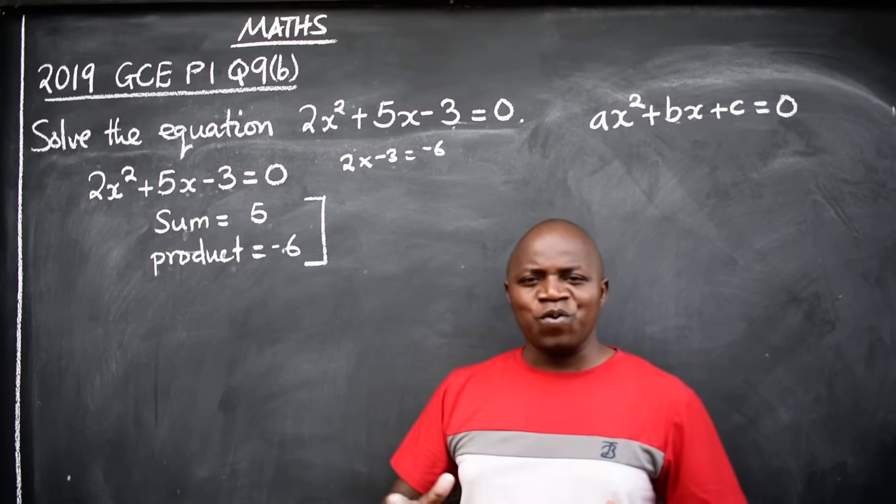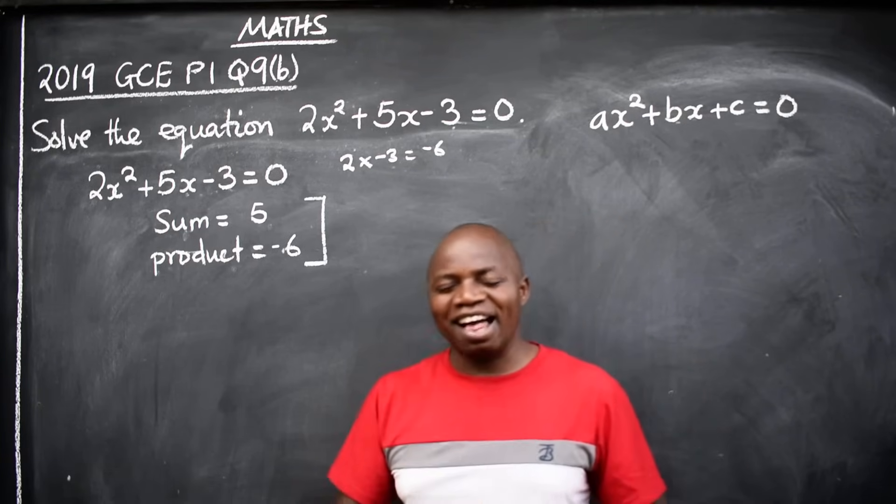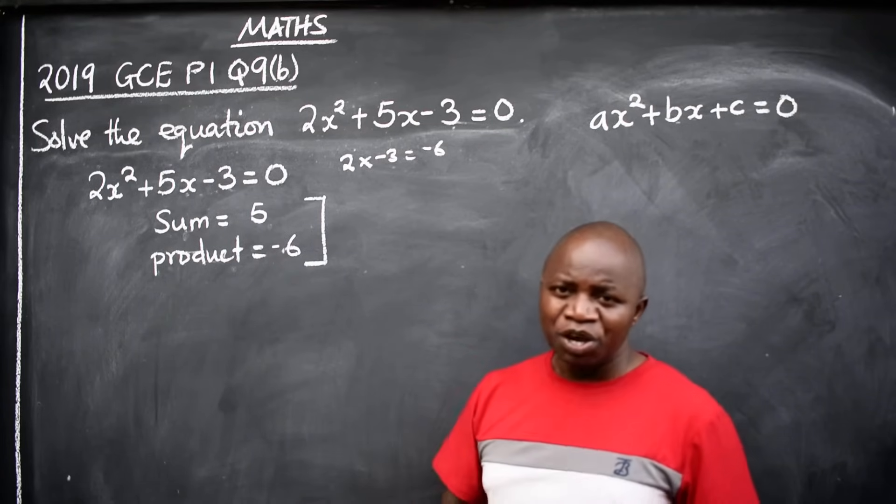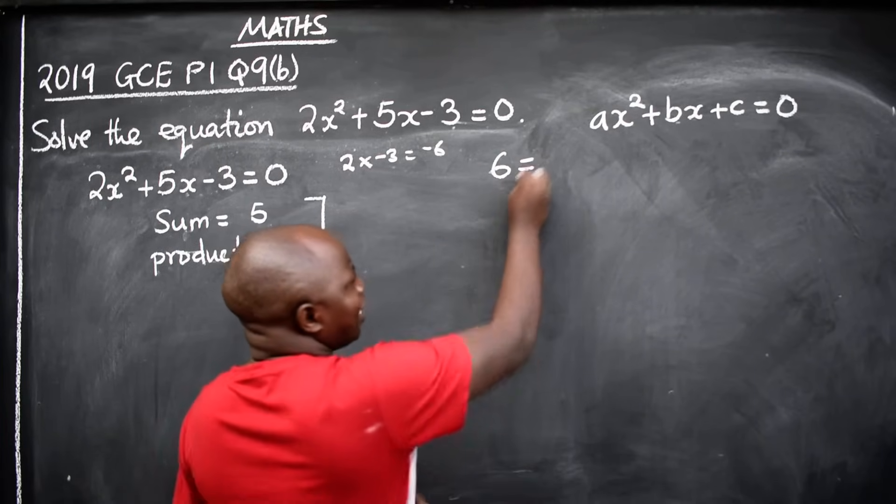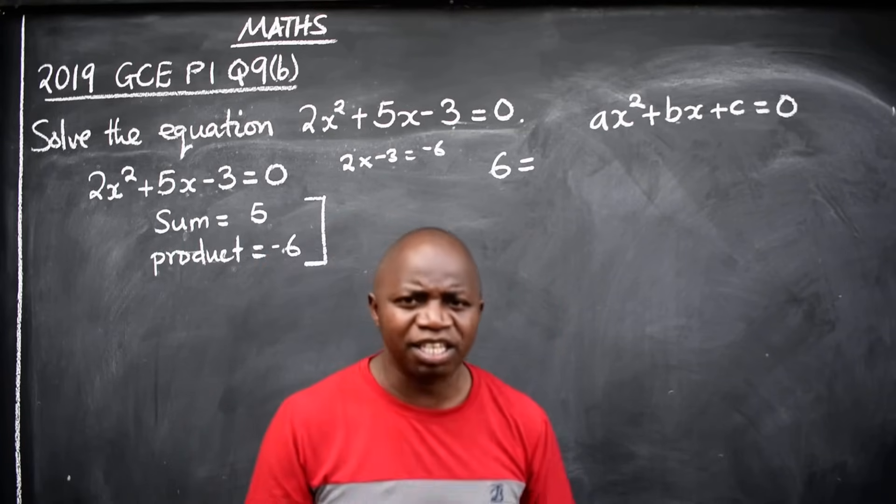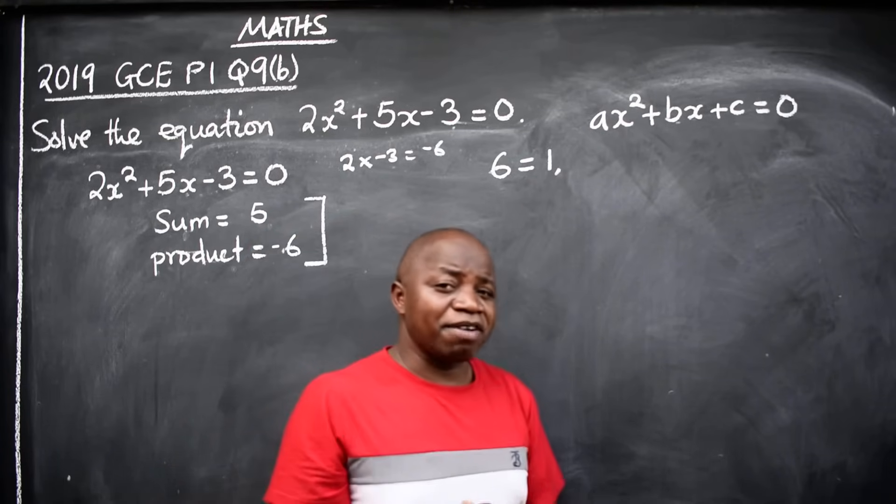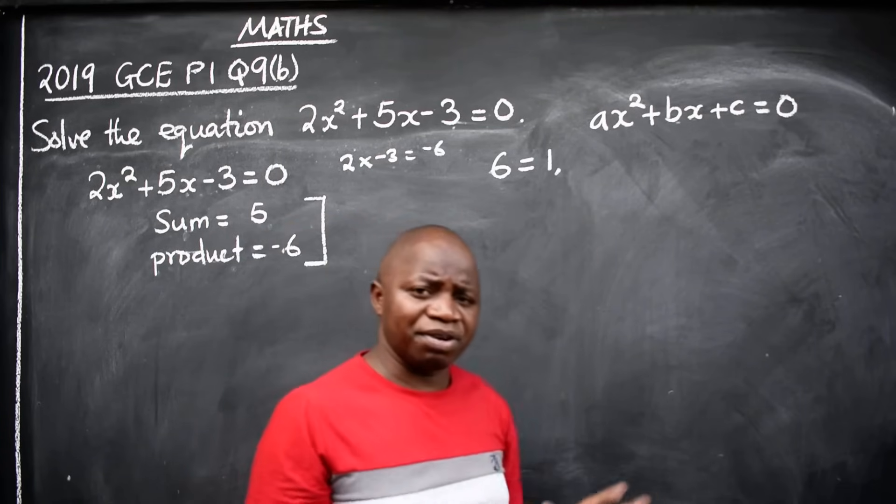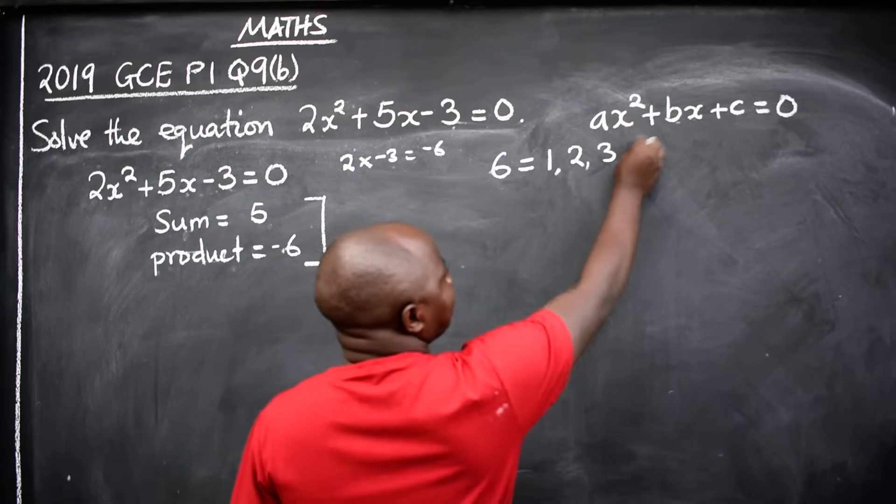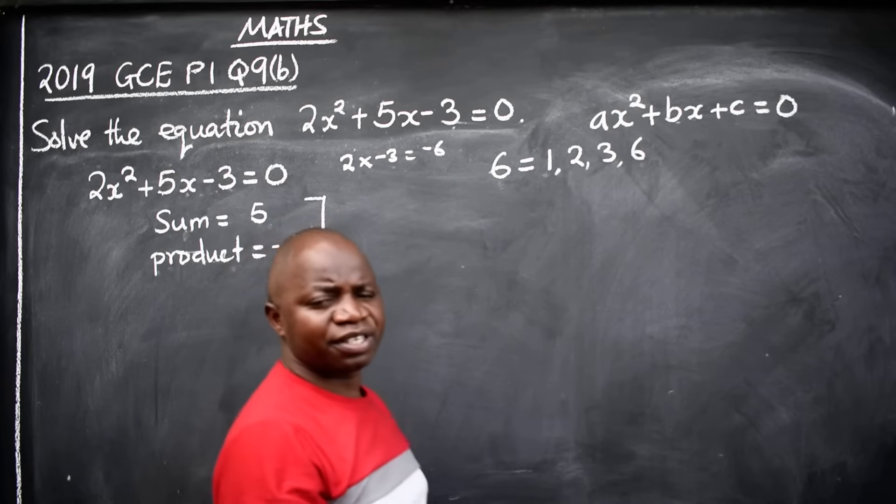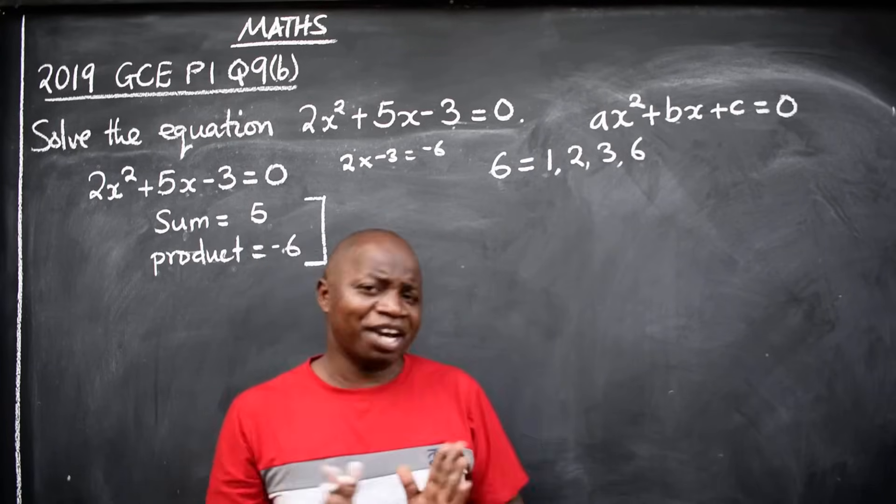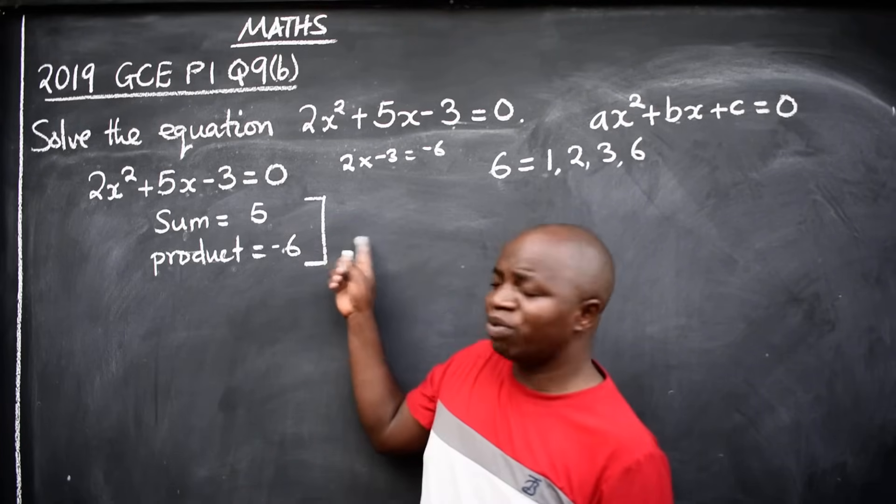You should always be getting the two numbers from the product. In this case, the product is -6. Let's list down the factors of 6. What are the factors of 6? Numbers that can go into 6 without remainder: 1, 2, 3, 6. So these are factors of 6, and the two numbers we're looking for should come from here.